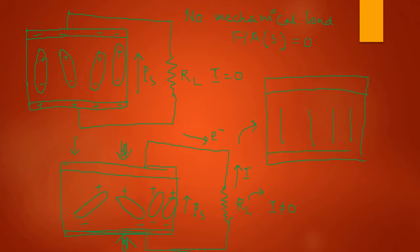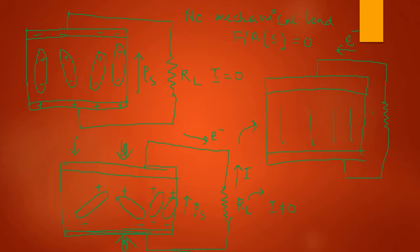Because of the expansion, the dipoles will be more aligned. More electrons will be accumulated here. In the external circuit, electrons will come to this side because the number of electrons will be increased here and the magnitude of Ps will increase. Across the load resistance there will be a current flow in this direction, which will also be non-zero.